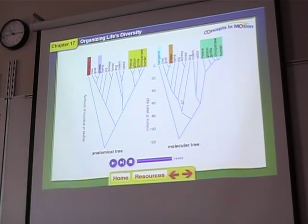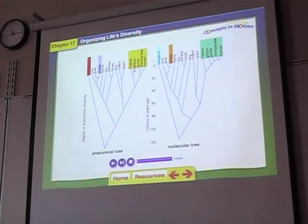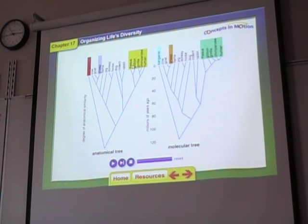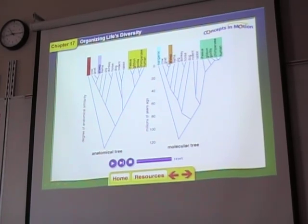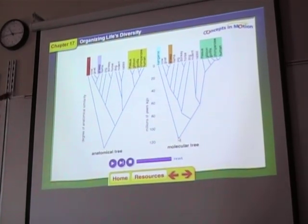Notice how closely related the primates are to each other. The rhesus monkey is a type of primate. Primates are closely related compared with kangaroos or sheep — you can see how far away the sheep and kangaroo are separated; they don't share common ancestors until way back.